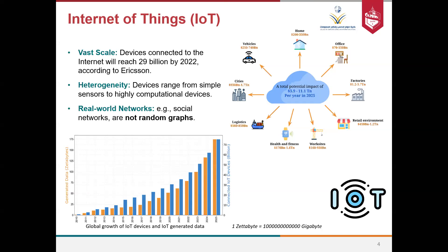Another characteristic of the IoT network is heterogeneity. The devices range from simple sensors such as temperature sensors and humidity sensors, all the way to highly computational devices like smartphones and personal computers, which are also part of the IoT ecosystem.